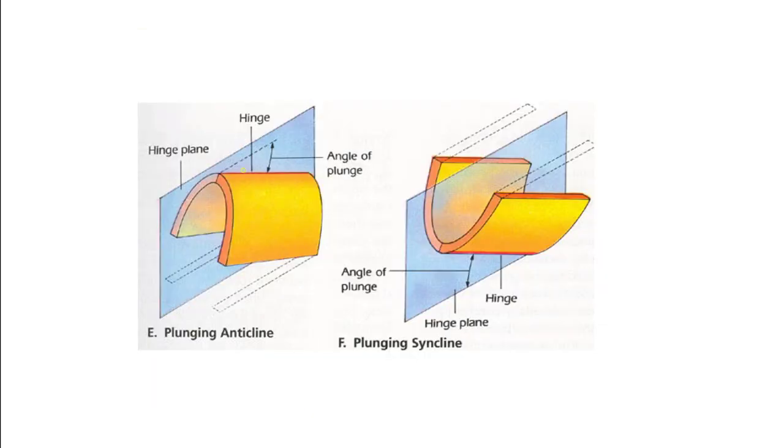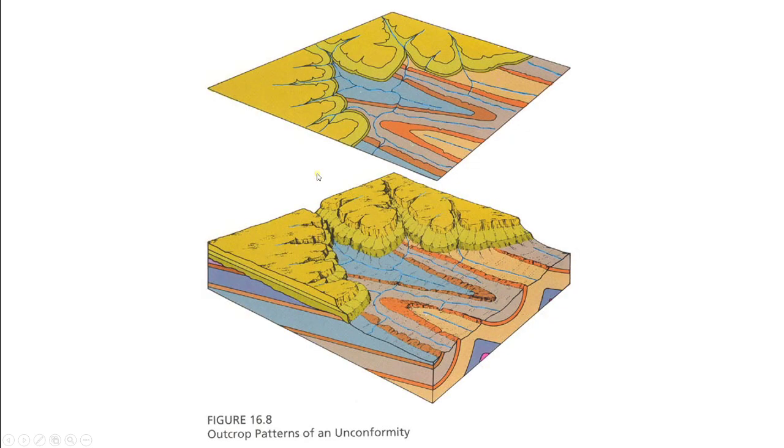I mentioned that in a fold, the axis in the original one I showed you can be sitting flat, but this is one where the hinge - the line on the plane, just like the dip we did with the bed - if you draw a horizontal line and then measure it down to the axis, that is the plunge of the fold. If a fold plunges, it changes the shape of the outcrop. Here's a plunging syncline on the right with the hinge plunging off to the right, and here's a plunging anticline with the hinge plunging off to the right.